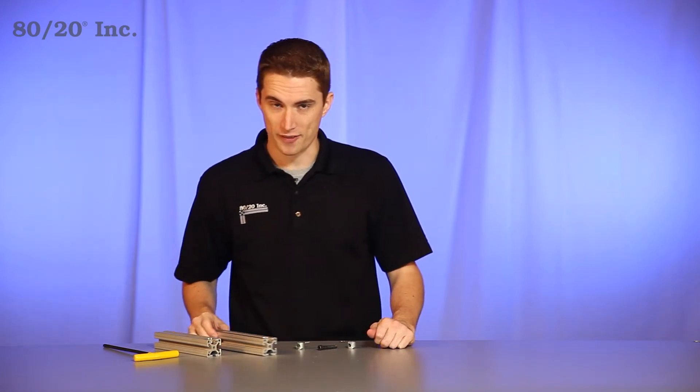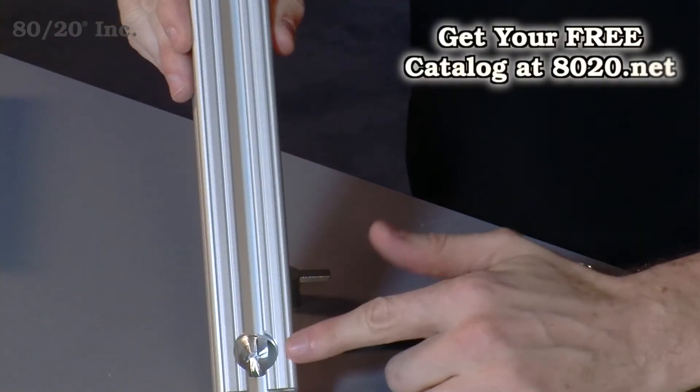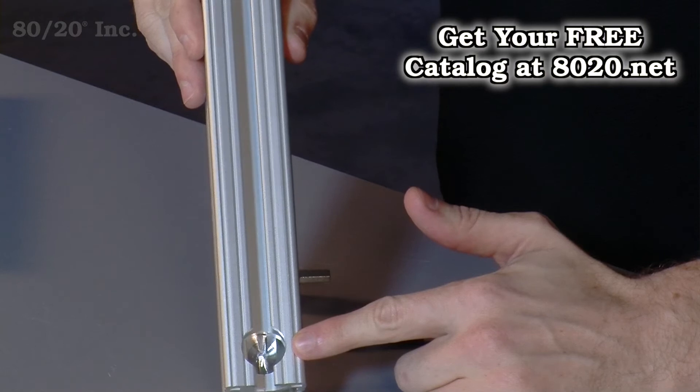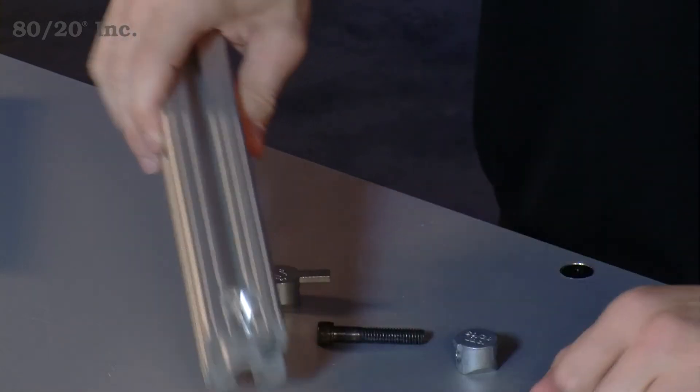Now, one thing you want to keep in mind when using the butt fastener is both of your bars will need a counter-bore service machined into them. More information on the counter-bore service can be found in the 8020 product catalog.